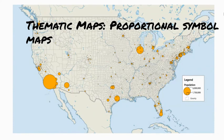Proportional symbol maps can also give us statistical or demographic data using symbols or scale. The bigger the symbol, the higher the statistic. Knowing that this map shows population in the US, which city has the higher population: San Francisco, LA, or Chicago?